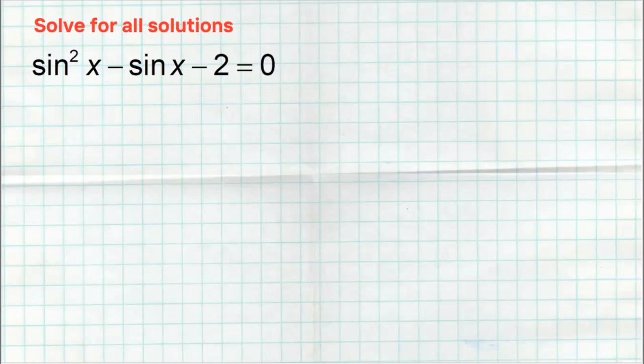Here's another factoring problem. This time I have three terms, so I cannot just factor out the greatest common factor because between my three terms there is no common value. Between the first two I could factor out a sine, but that doesn't work — you've got to factor something from all the terms.